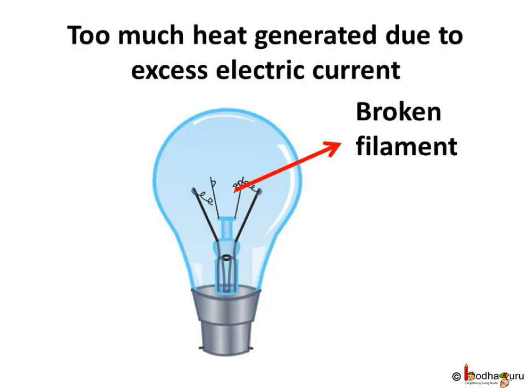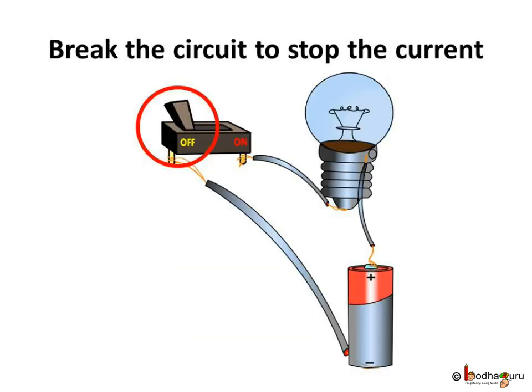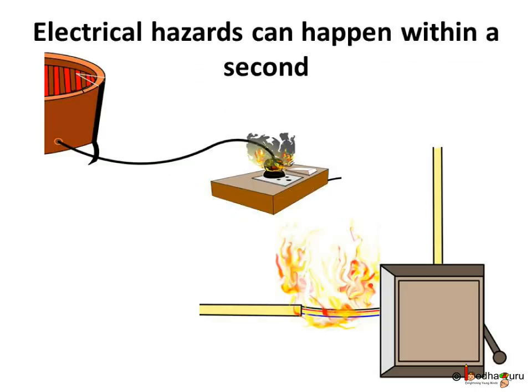In our previous class, we saw that the bulb wasn't glowing because the circuit was broken as the filament was burnt due to overheating. We can take a simple idea from that. If we break the circuit, the current wouldn't flow through the broken or open circuit. But we cannot turn all the switches off or cut the wires quick enough to break the circuits in time.